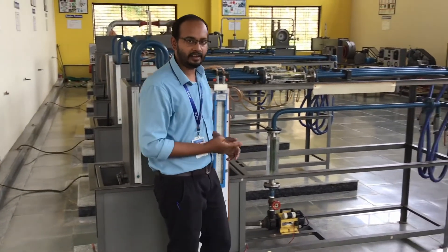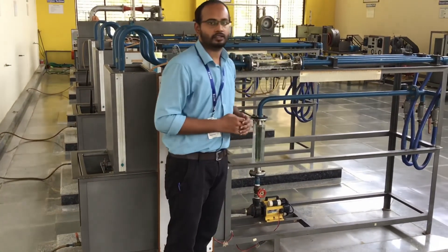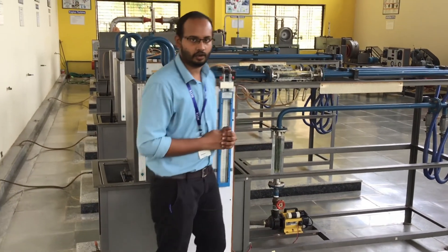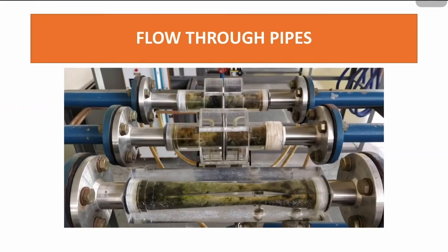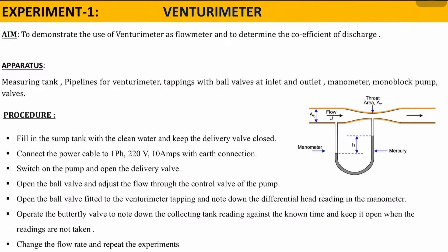Hello everyone. This is a fluid mechanics and machinery lab. Today we shall discuss experiment one, which is flow through pipes — it comes under minor experiments. This consists of three different experiments: venturi meter, orifice meter, and flow through flow meter. Today we shall discuss the first experiment, which is venturi meter.